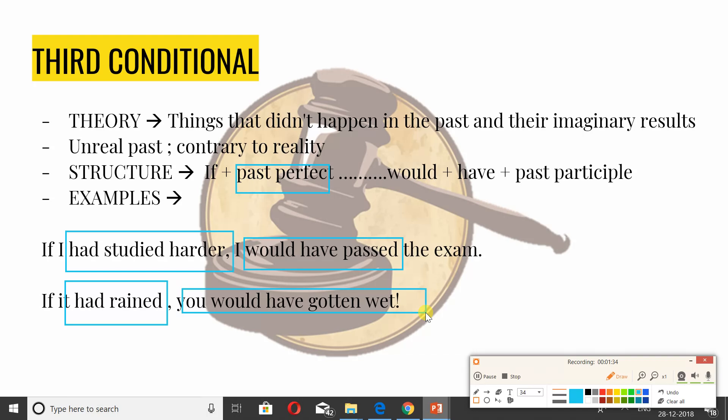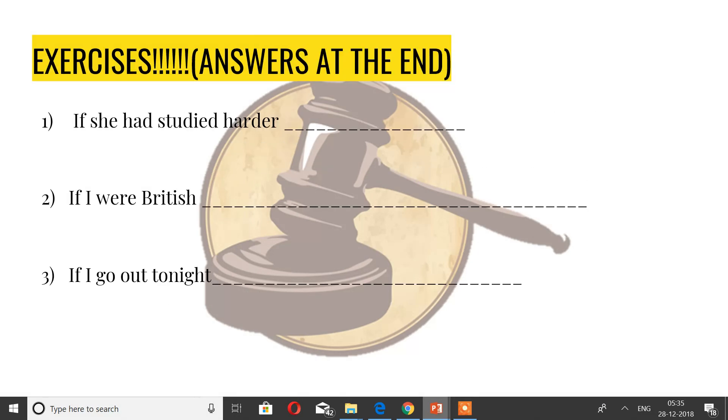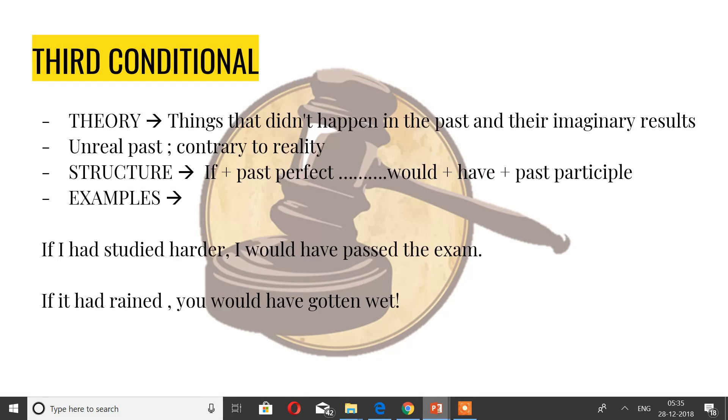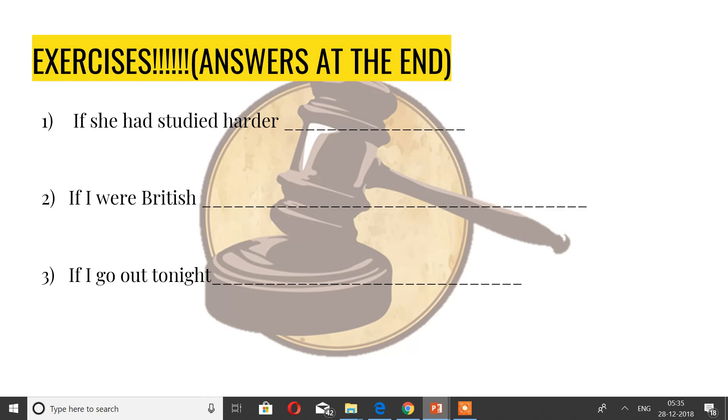What mistakes people do: if it would have rained, you would have - don't do all that. If it had rained, you would have gotten wet. This was the last one.